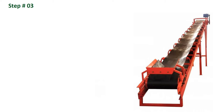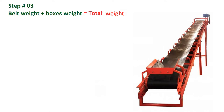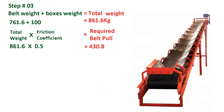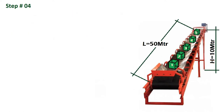In step three, we will calculate the total weight by adding the belt weight and the material weight traveling on the belt. The total weight of the belt is 761.6 kg and the boxes weight is 100 kg, giving a total weight of 861.6 kg. We then calculate the required belt pull using the total weight, belt length, height, and coefficient of friction, resulting in a required belt pull of 430.8.